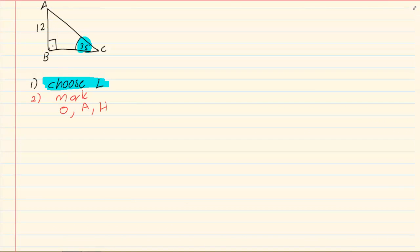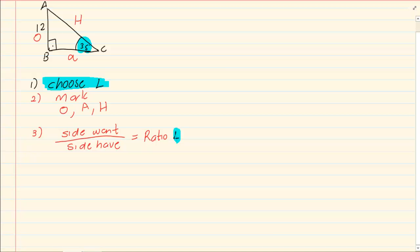So our O in this case is going to be AB. Our AC is going to be our H and our BC will be A. So once you mark your O, A and H, then you say, side you want, the side you basically want to calculate, over the side you have. This is going to give you a ratio and you are going to put the angle that you had chosen. After you do that, you are going to calculate using algebra.